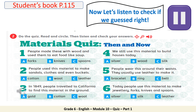Question one: People made these with wood and use them to eat food like soup. Answer: C — spoons. Question two: People use this material to make sandals, clothes, and even buckets. Answer: C — leather. Question three: In 1849, people traveled to California to find this material in the ground. Answer: A — gold. Question four: We still use this material to build houses today. Answer: wood. Question five: People wear this around their waists — they usually use leather to make it. Answer: C — belt. Question six: Today, people use this material to make jewelry, forks, knives, and spoons. Answer: A — silver.